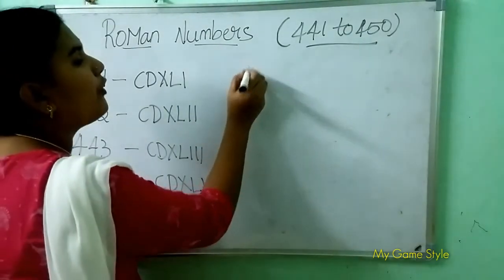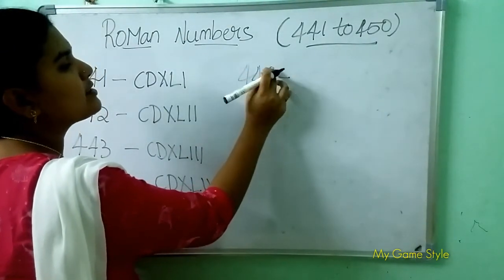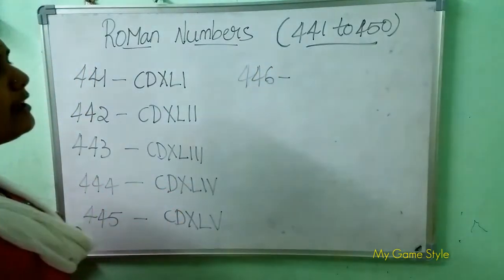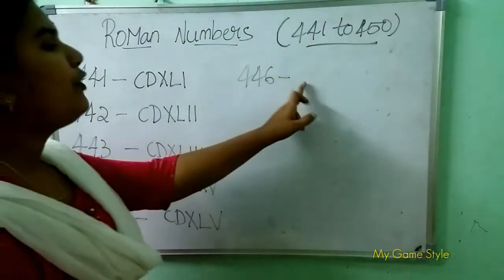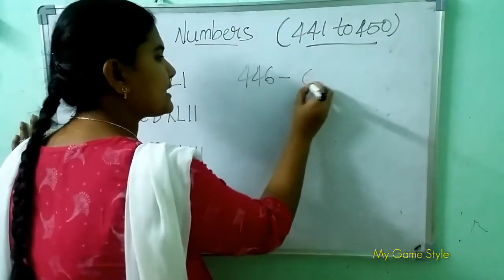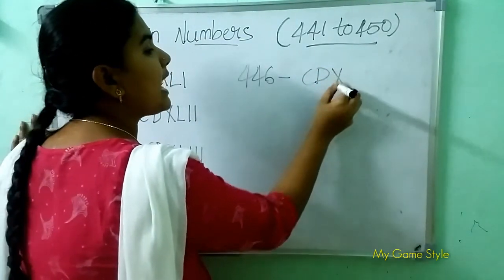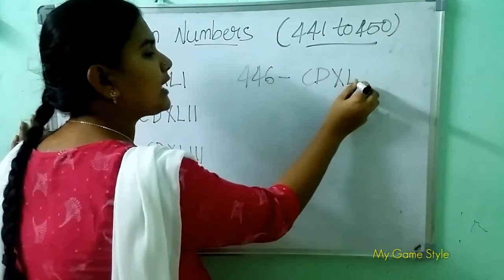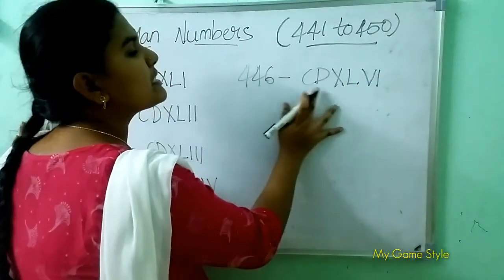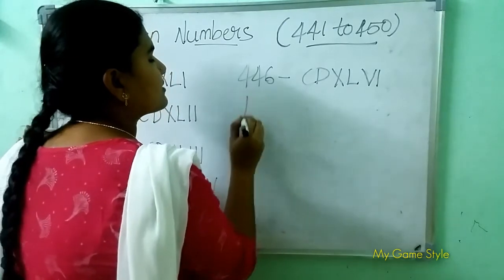After that, 446 means 446. Now how to write 446 in Roman number? CD is 400, XL is 40, VI is 6. This means 446.